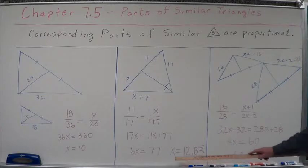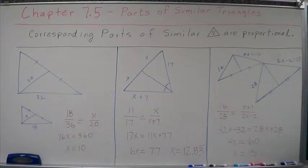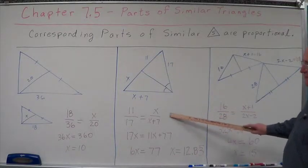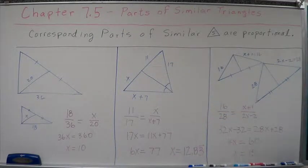Subtract 11x from both sides, you get 6x equals 77. Divide by 6, you get x equals 12.83 repeating. Plug that in here. Do that proportion. You'll see that they're both equal. All right?